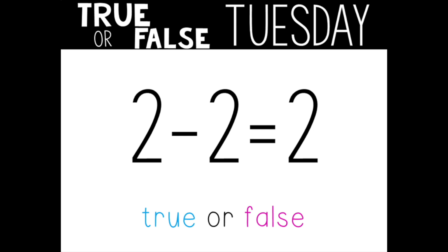Next equation. True or false? Two minus two equals two. Are you still giving me a thumbs up or thumbs down? Be careful, mathematicians — don't let this one trick you. This one is false. Two minus two does not equal two. If I have two and I take two away, I can't still have two left at the end, can I? What would you change to make it true? I would change the second number in the equation — I would change it to a zero. Two minus zero does equal two. Can you think of another way to change the equation to make it true?